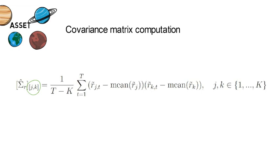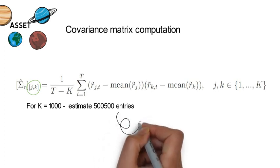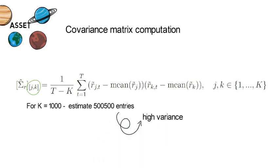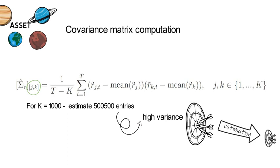Now the problem is it's a dimensionality problem. Let's assume that k equals 1,000, so we have 1,000 assets. We would have to estimate 500,500 entries in the covariance matrix. Now while that estimate of the covariance matrix is unbiased, it has a very high variance. And that high variance reduces the precision of the estimates of each entry to the covariance matrix.